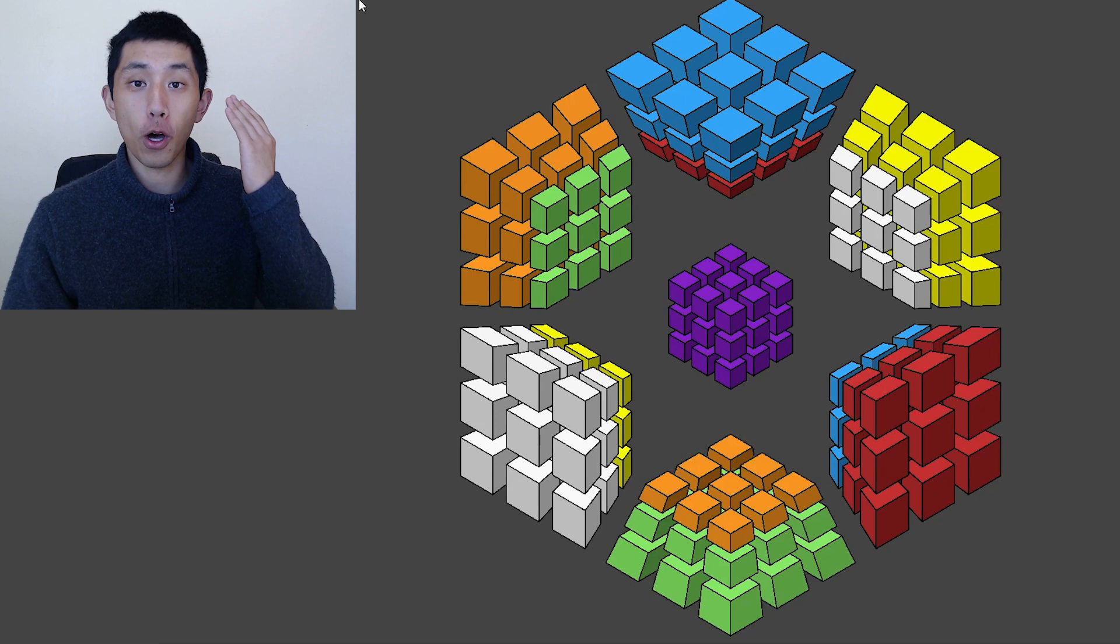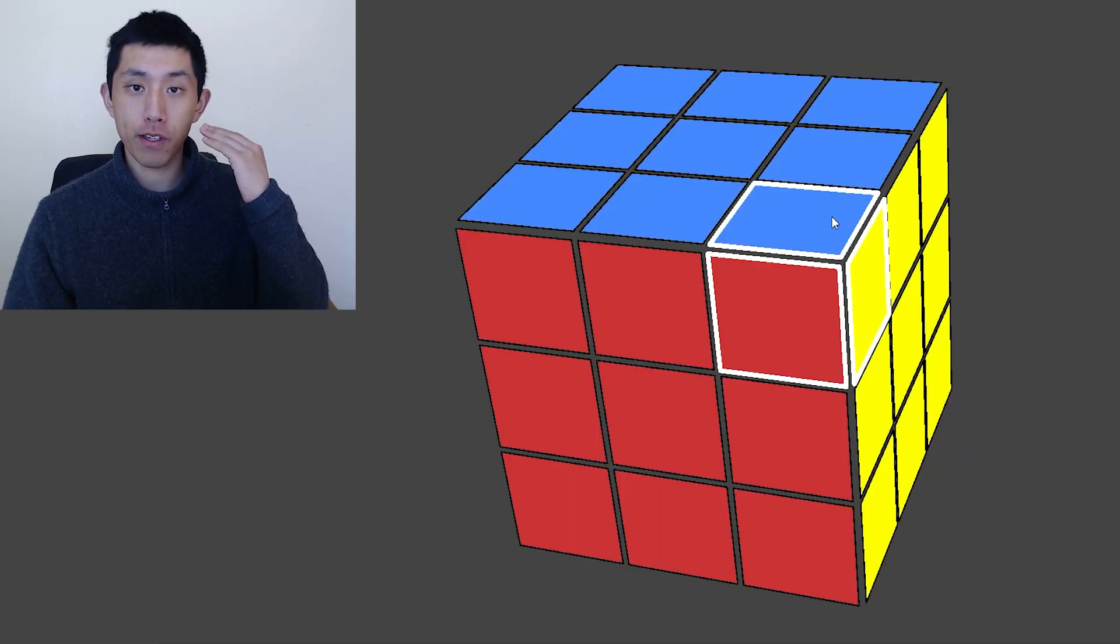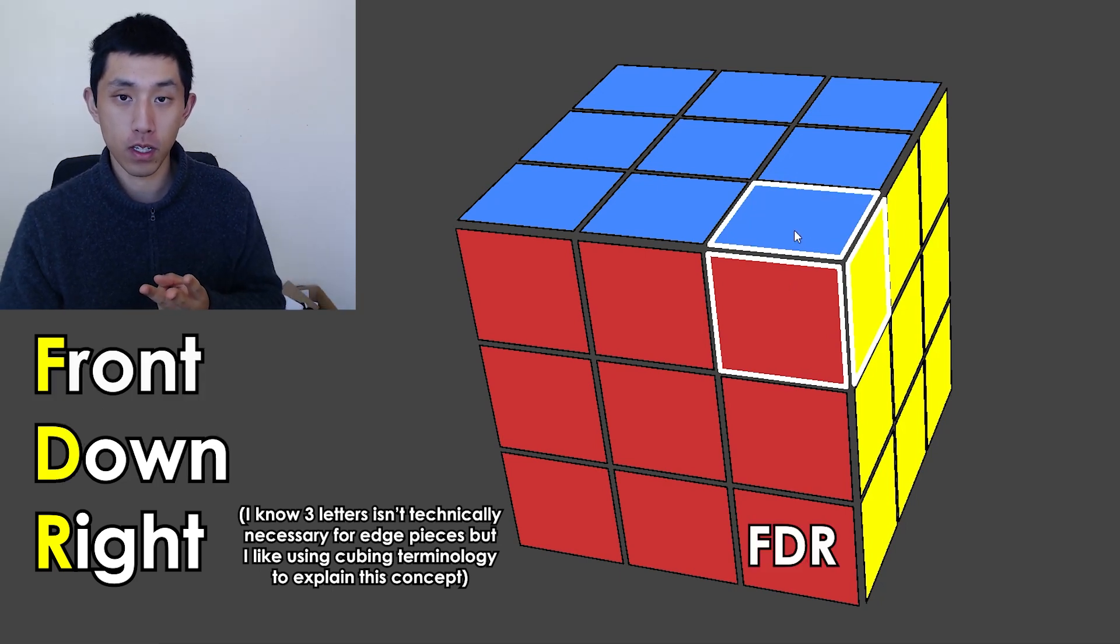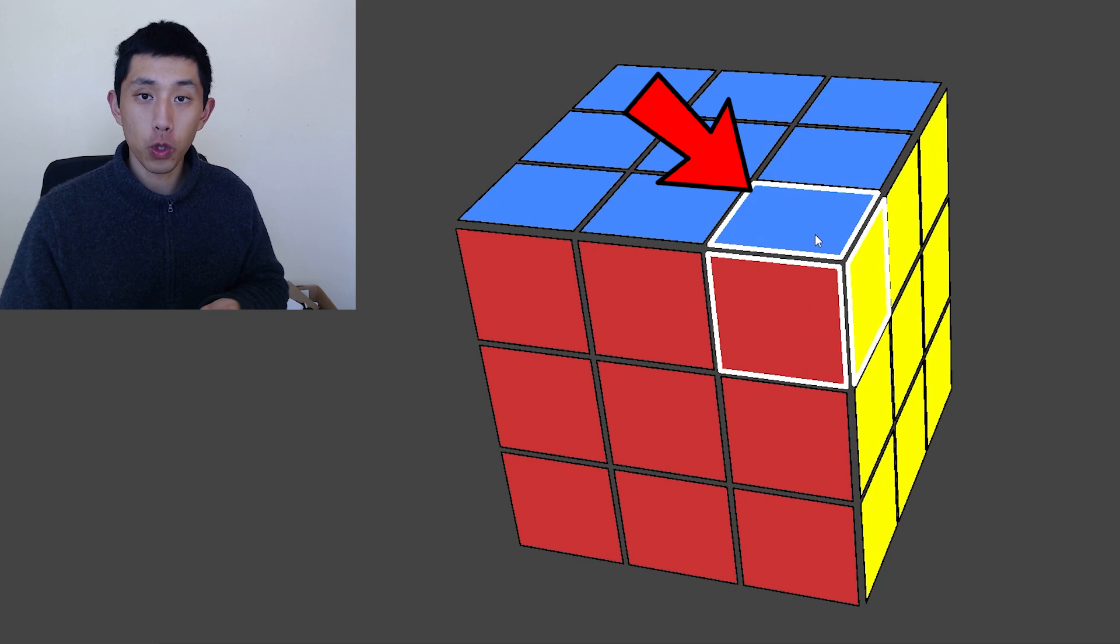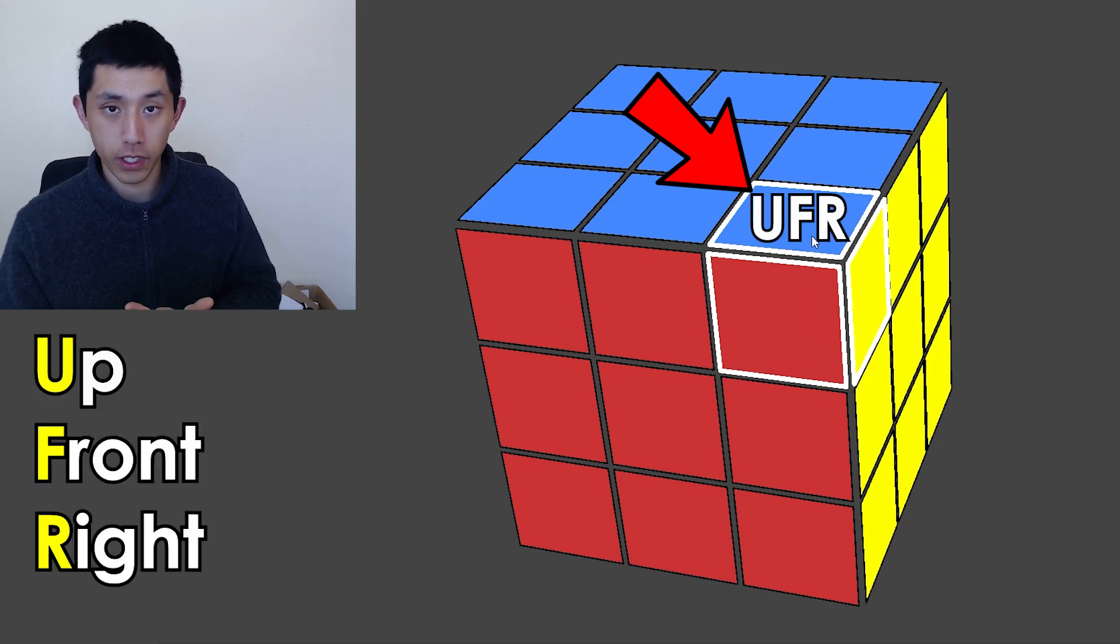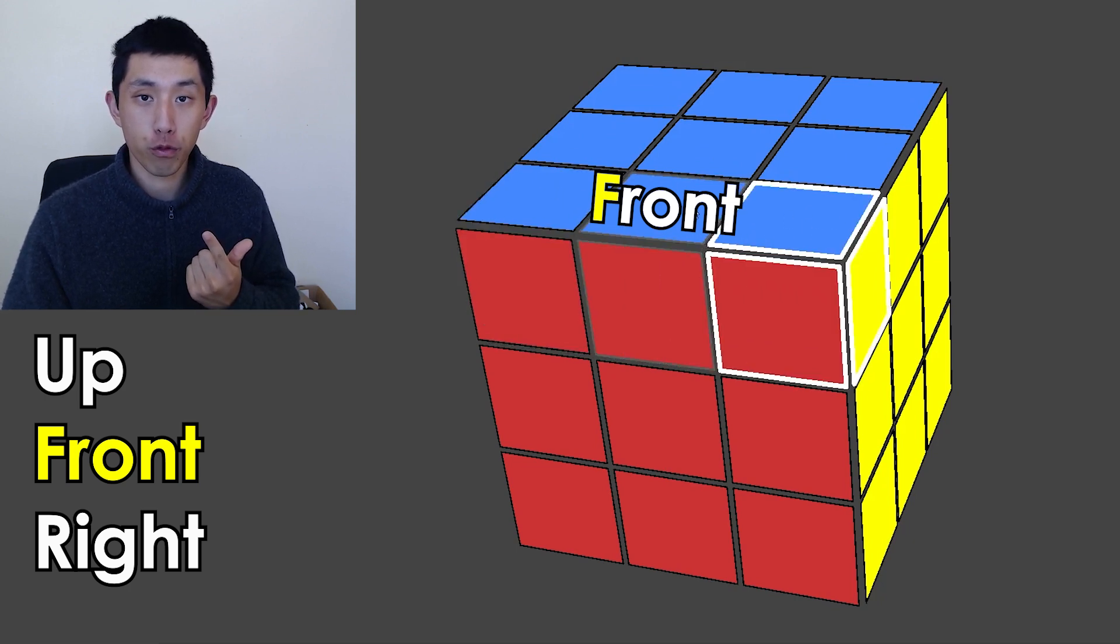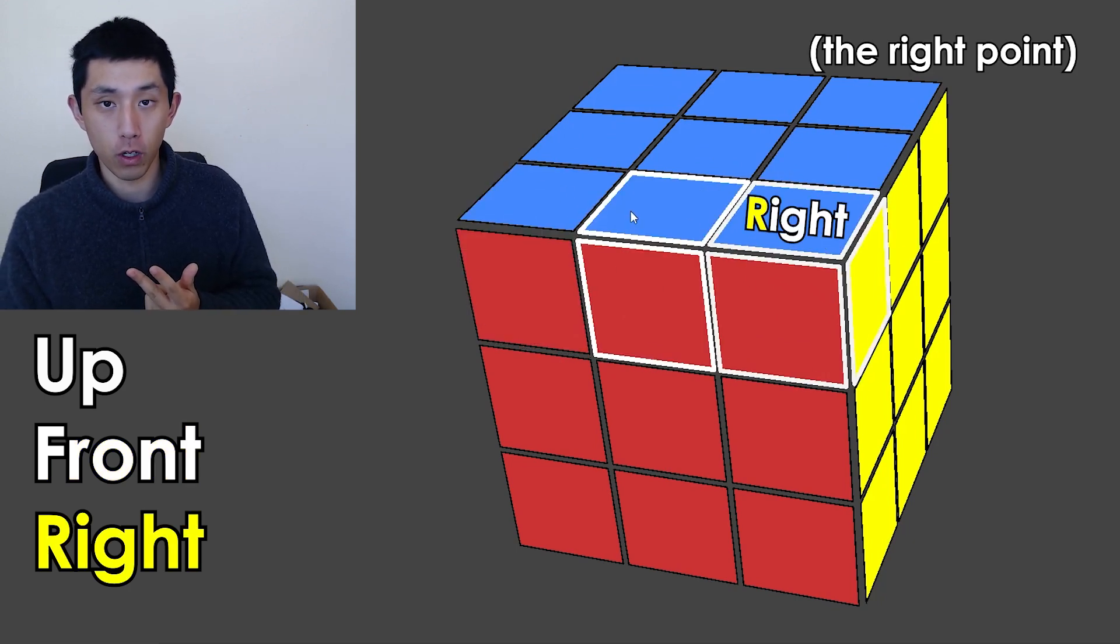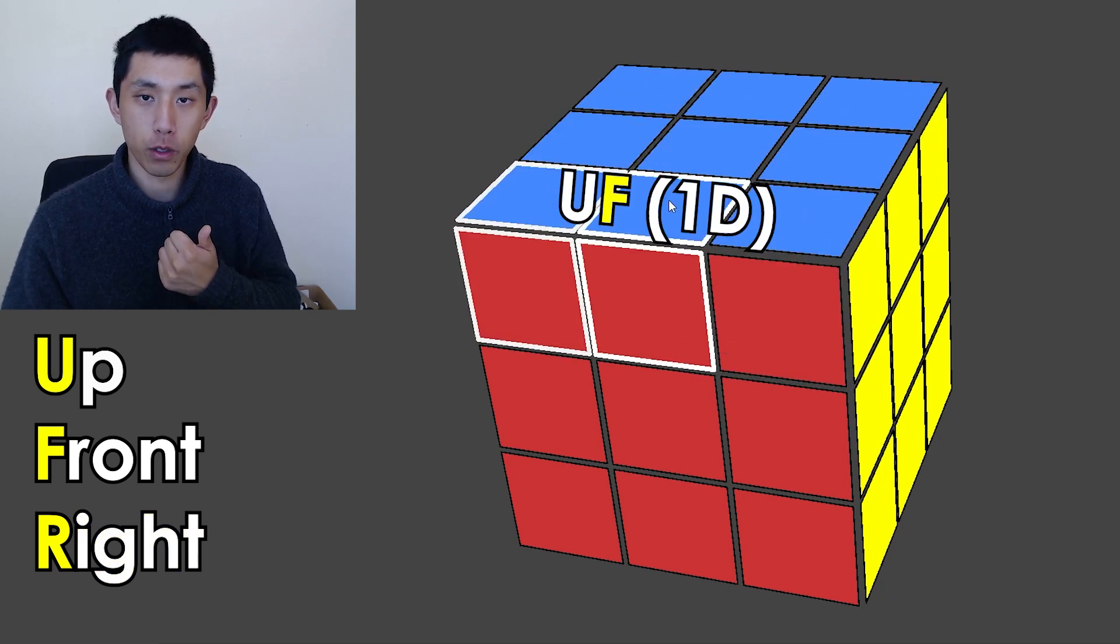To better understand this, let's hop back into 3D. Because it's in 3D, we can express the location of every sticker or piece using just three coordinates. For instance, if we want to give a location for this sticker here, we can call it the Up Front Right sticker. Up because it's on the upper face, front because it's on the front line of the upper face, and right because it's on this point of the front line. And notice how we reduce a dimension every single time.